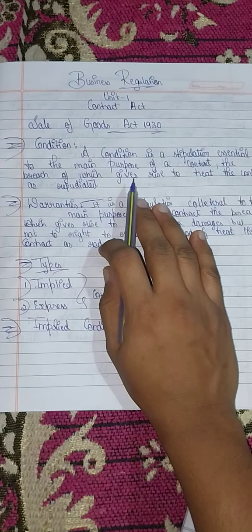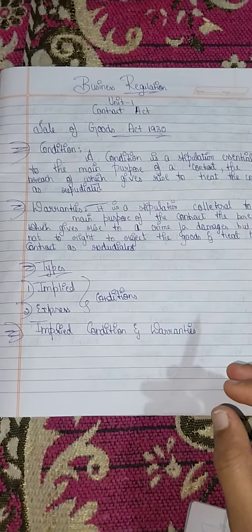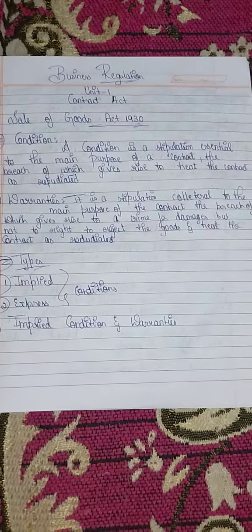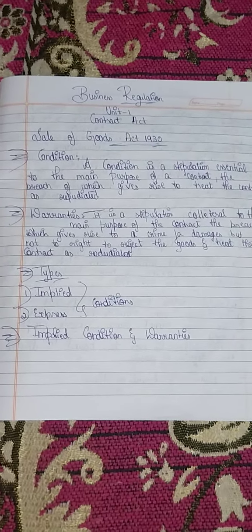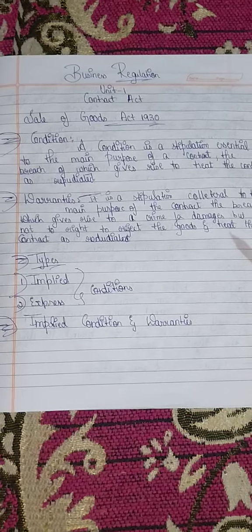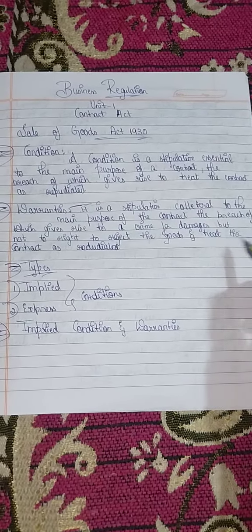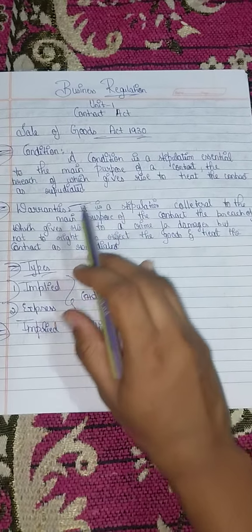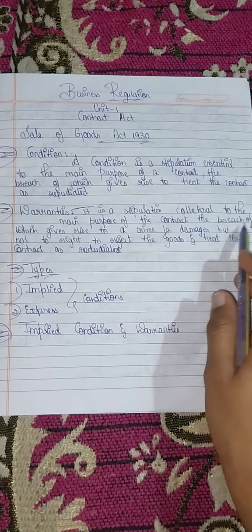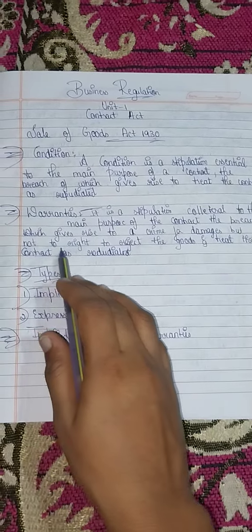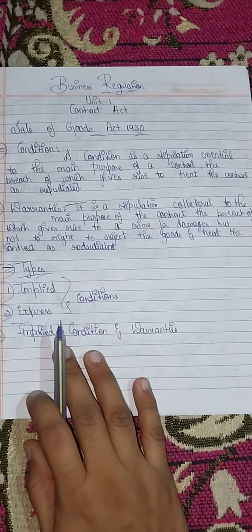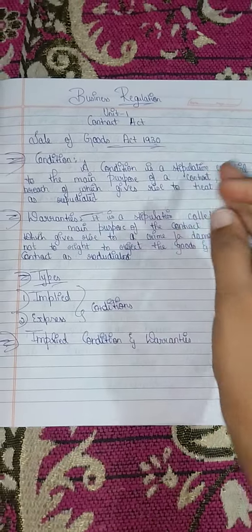A condition is a rule or regulation of the contract. By contrast, a warranty is a stipulation collateral to the main purpose of the contract, the breach of which gives rise to a claim for damages but not to the right to reject the goods and treat the contract as repudiated.